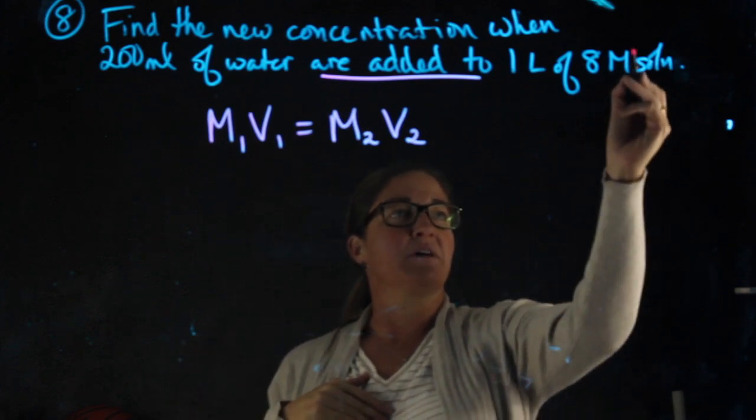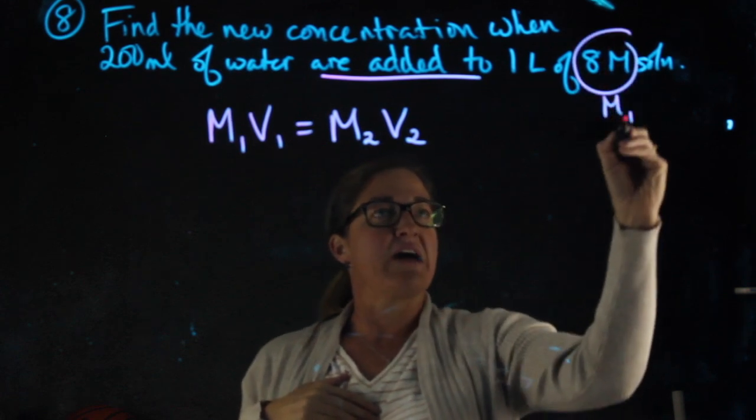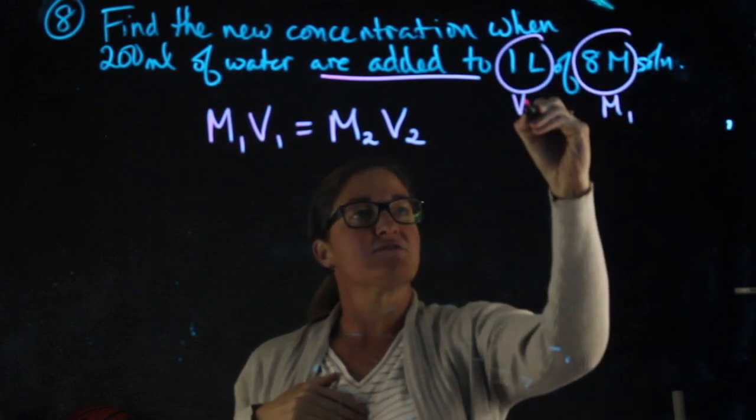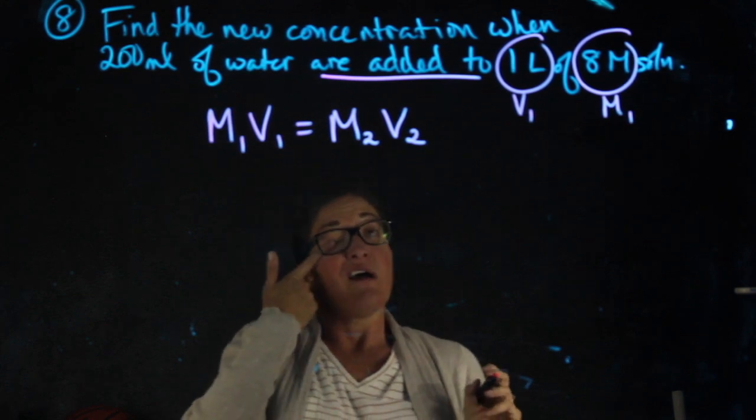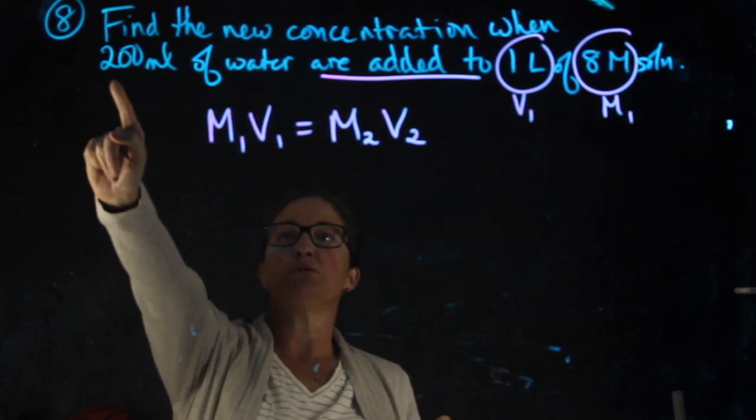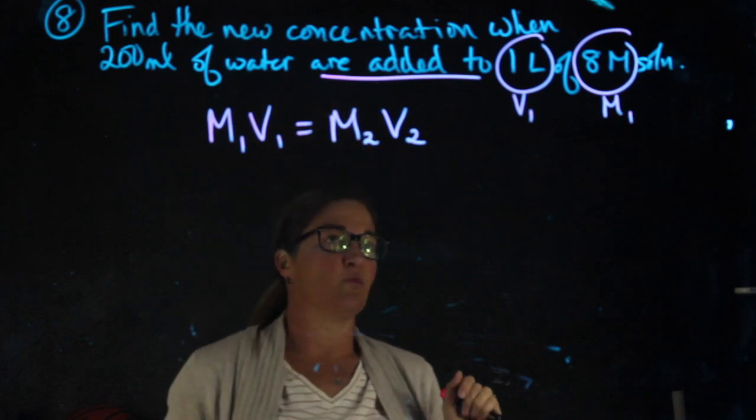For this problem, this is my starting solution. That'll be M1 and this will be V1. Here's where we need to be careful though. It says 200 milliliters of water are added to one liter,